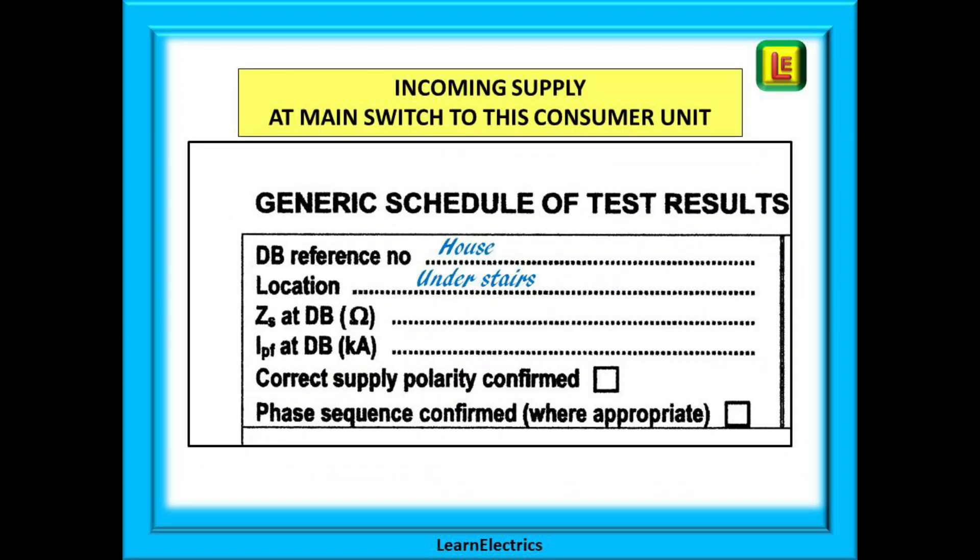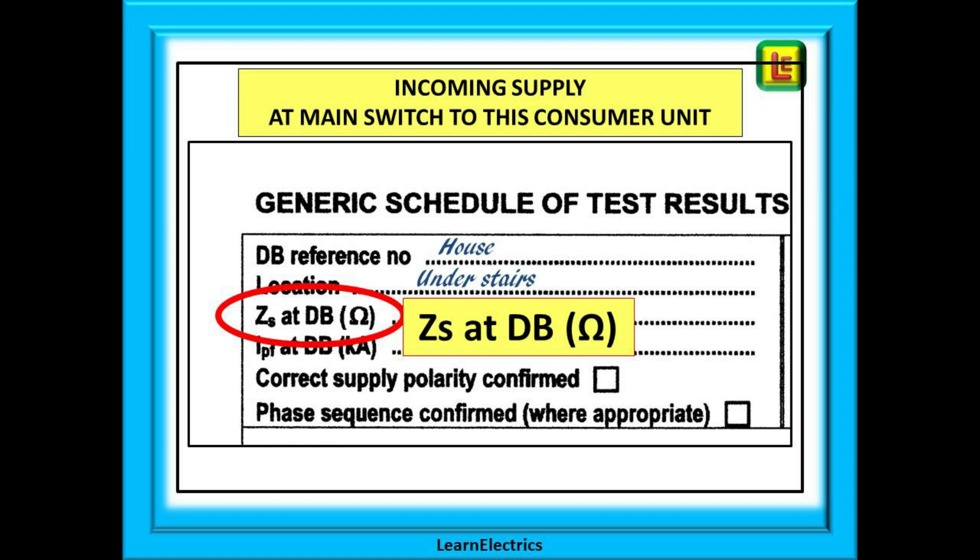Let's begin and we will complete this schedule with examples as we move along. Top left we must enter details of the incoming supply at the main switch for this board. What is happening at this main switch? That is the question. So DB reference does this distribution board or consumer unit have a name or a reference number? In a factory it may well be listed as DB4 or canteen or some other way of identifying it. In a house it may well be the only board so calling it house will be fine. Next where is it located? Under the stairs, in the kitchen, the hallway, wherever. Now we've come to an entry that confuses a lot of people. It says ZS at DB4 but everyone shouts we always put ZE in there. So a little explanation.